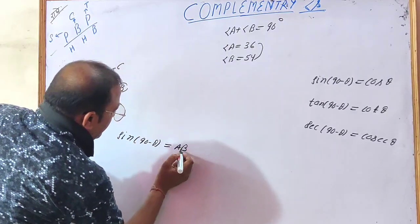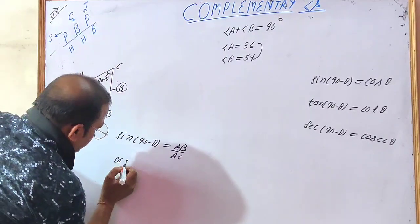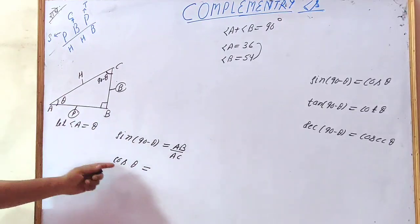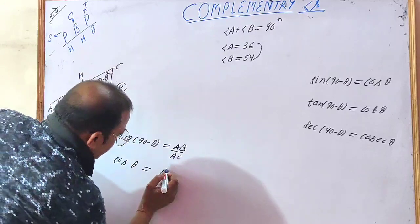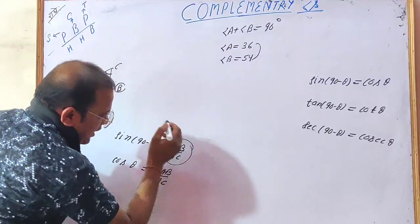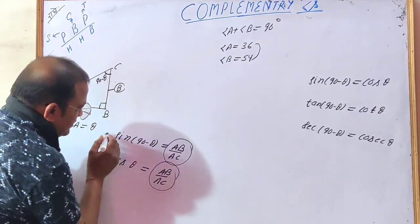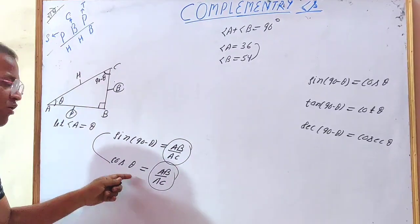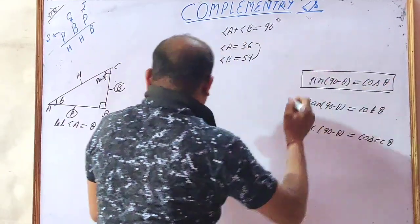Now write cos theta. The angle is A, and cos is base upon hypotenuse. The base is AB and the hypotenuse is AC, so cos theta equals AB upon AC. We can see that both sides equal AB upon AC. It means we can say that sine(90 minus theta) is equal to cos theta. This is the verification. This verification may not come in your exam, but it is good to know.